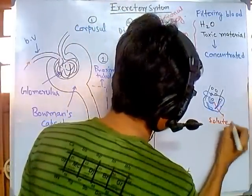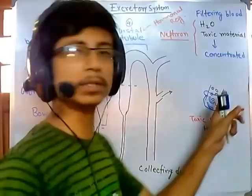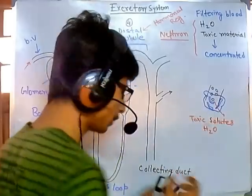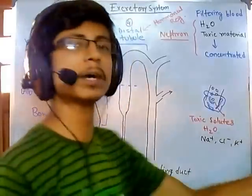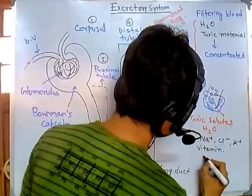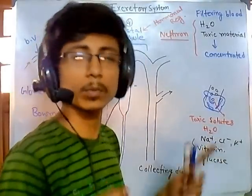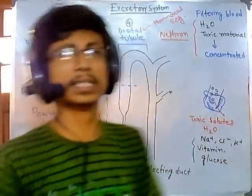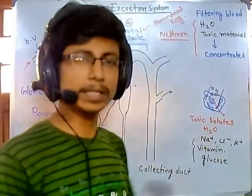What comes out includes toxic solutes along with water, since water is permeable through the pores. Some undesired materials also come out, such as ions like sodium, chlorine, and potassium. Vitamins and glucose sometimes come out too — things we don't want ending up in urine. This process is not very selective, so both toxic and non-toxic, required and unrequired materials pass through.